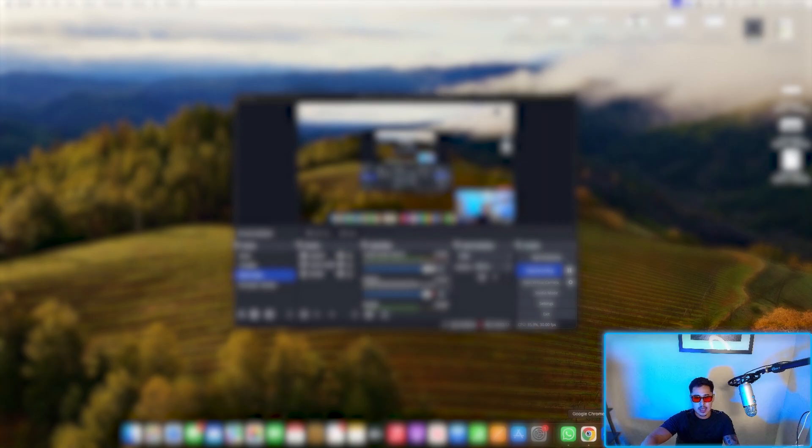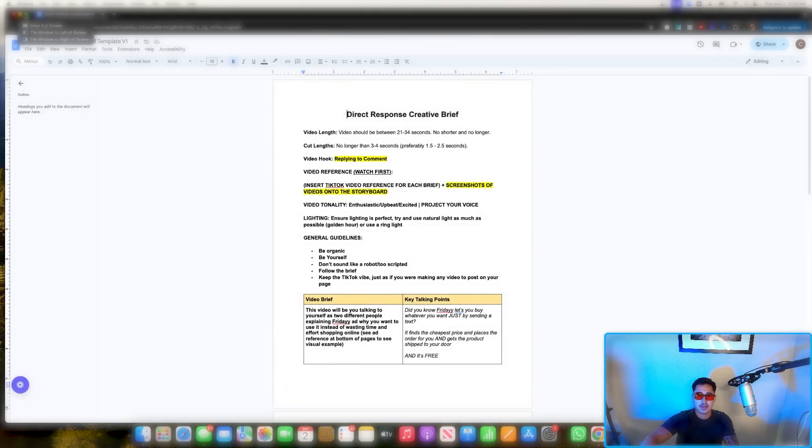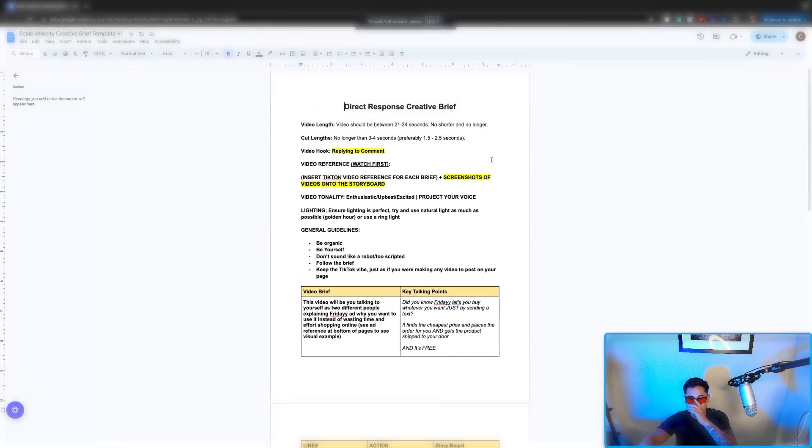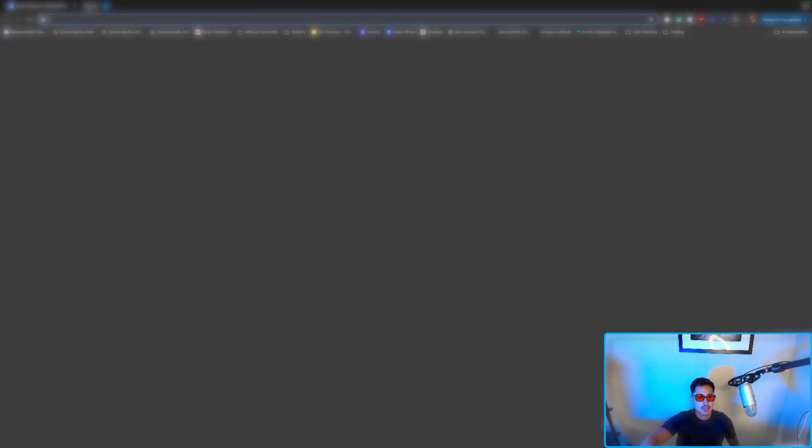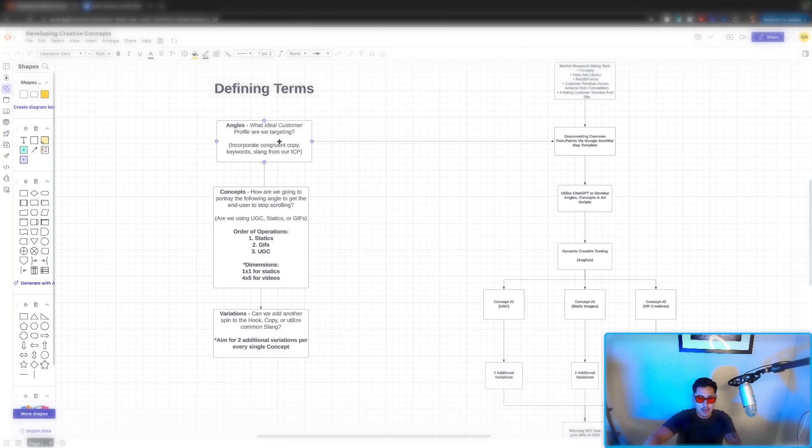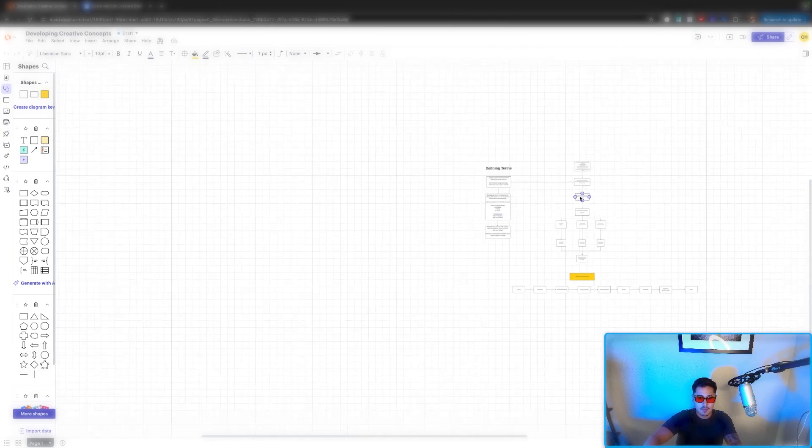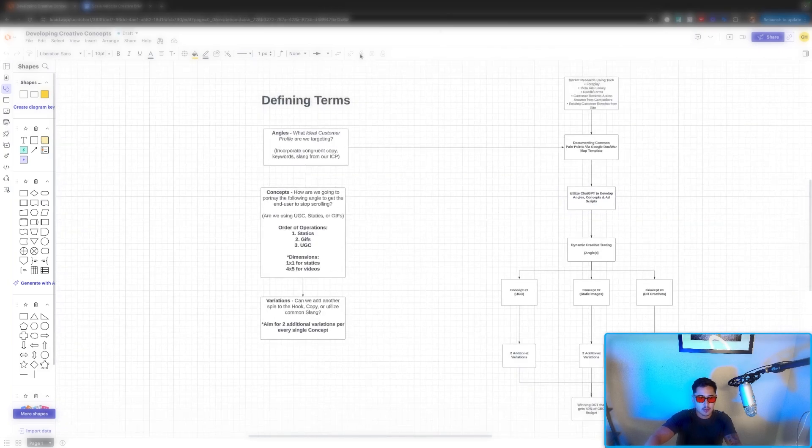So in order to eliminate risk, you need to build systems. And when you have systems in place, it makes your life way, way more easier. So for example, when it comes to the creative brief process and what that entails, it's the same way we define our terms at this stage within the flywheel system.